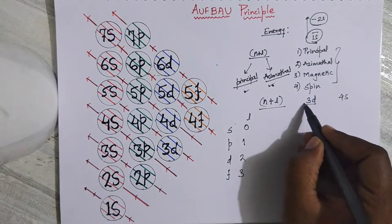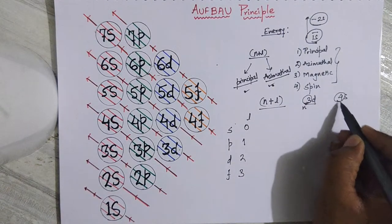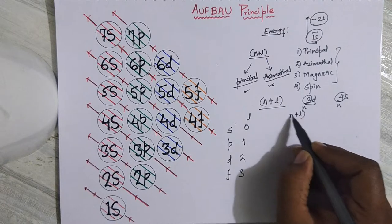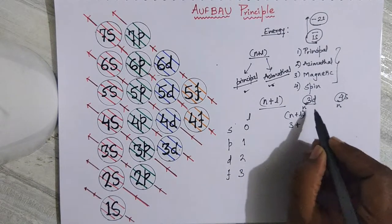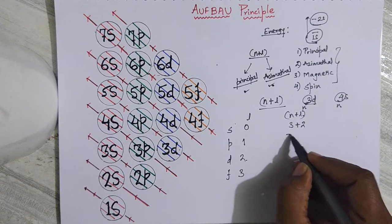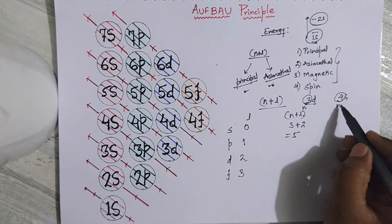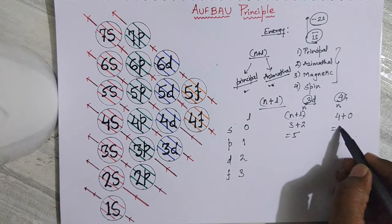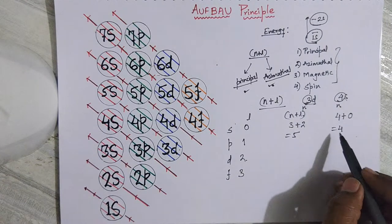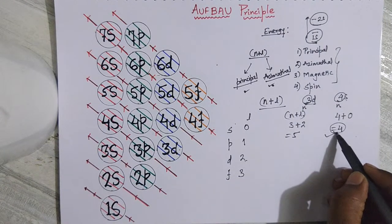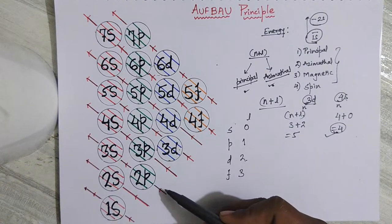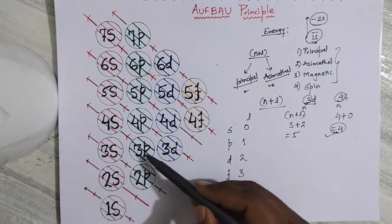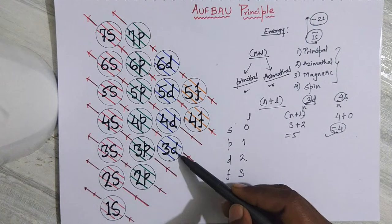For example, comparing 3d and 4s: for 3d, n = 3 and l = 2 (for d), so n+l = 5. For 4s, n = 4 and l = 0 (for s), so n+l = 4. The rule says the orbital with the lower n+l value gets filled first. So 4s (n+l = 4) fills before 3d (n+l = 5), even though 4s has a higher principal quantum number.